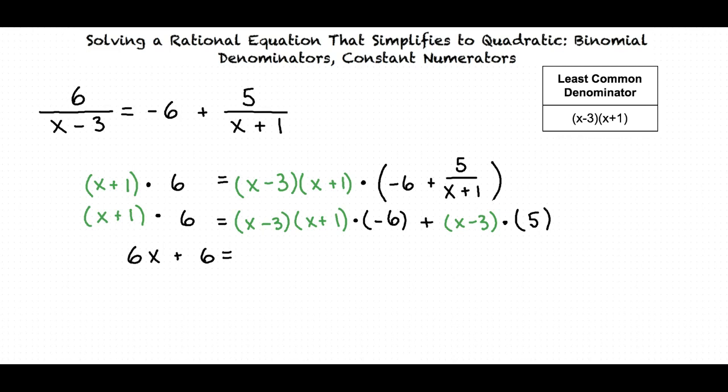Now we move on to the right-hand side of our equation. x plus 1 times x minus 3 equals x squared minus 2x minus 3. And we multiply this by negative 6.